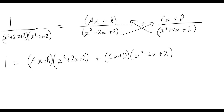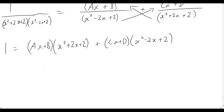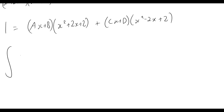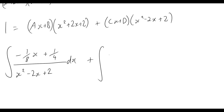After expanding and equating both sides — whether via simultaneous equations or Gaussian elimination — I'll skip straight to the results. We end up with the integral of (−(1/8)x + 1/4) over (x squared minus 2x plus 2) dx, plus the integral of ((1/8)x + 1/4) over (x squared plus 2x plus 2) dx.